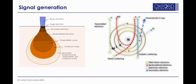Main beam electrons can also transfer energy to an electron within one of the shells surrounding the atomic nucleus, resulting in the production and emission of a secondary electron. The loss of this electron from an inner shell causes ionization of the atom and creates an unstable state. Stability is regained when an electron from an outer shell fills the inner shell vacancy, releasing energy in the form of an X-ray photon. These are known as characteristic X-rays, because measuring their energy identifies the type of atom they originated from, allowing us to identify elements within a sample — and this is what EDS does.